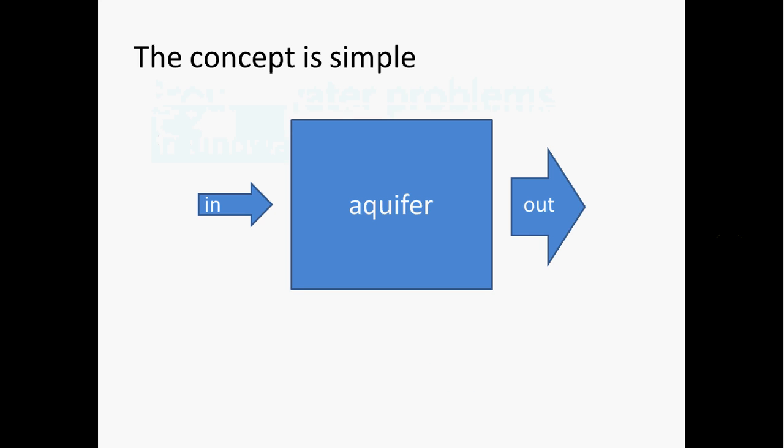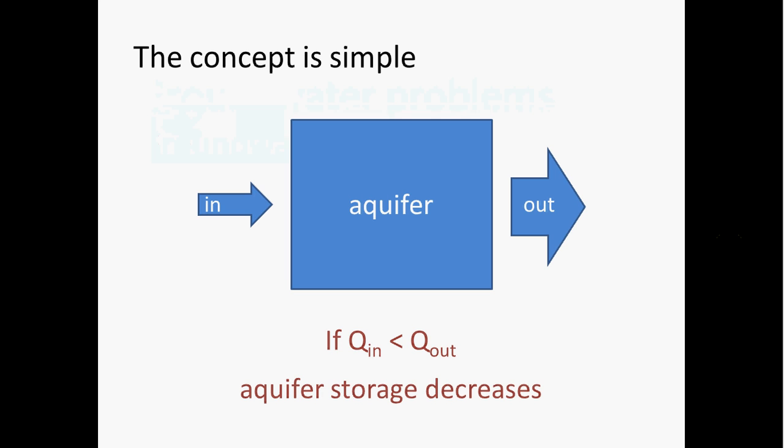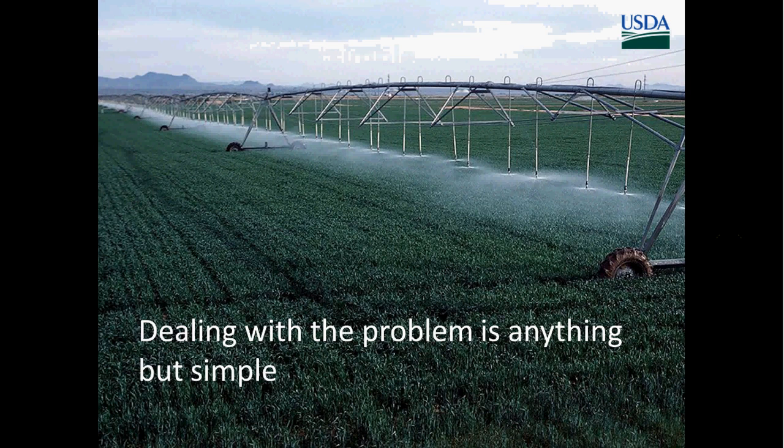So the concept is relatively simple. If the rate at which groundwater is being pumped out is greater than the rate of recharge, then aquifer storage is depleted and aquifer storage decreases. But the choices of how to deal with this problem are anything but simple.